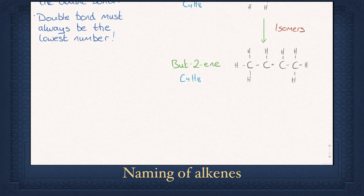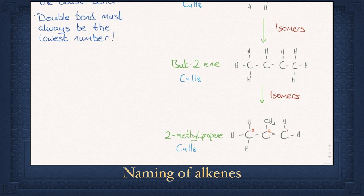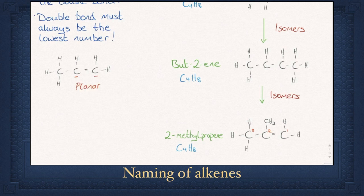You could also be asked to find isomers of alkenes, which can be a little trickier, but they still follow the same rules. For but-1-ene there are two isomers. Double check the molecular formulas to ensure they are all the same.